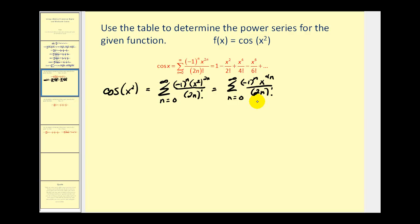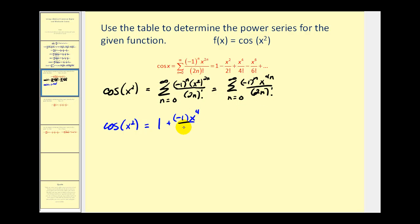Let's generate some of the terms in this power series. When n is zero, we'll have negative one to the zero, which is one, times x to the zero, which is one, divided by zero factorial, which is one. When n equals one, we'll have negative one times x to the fourth divided by two factorial.